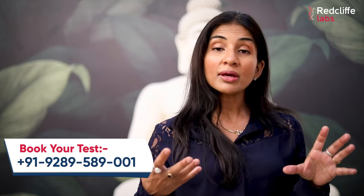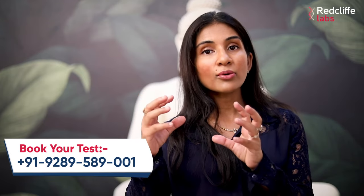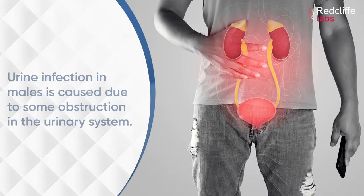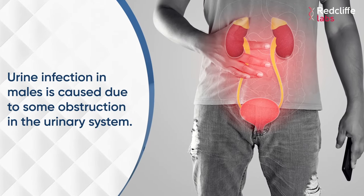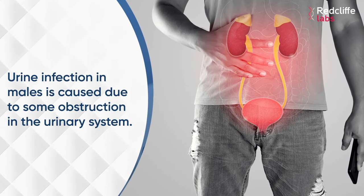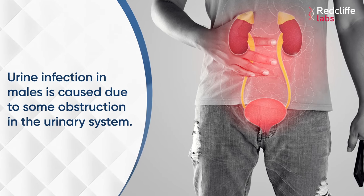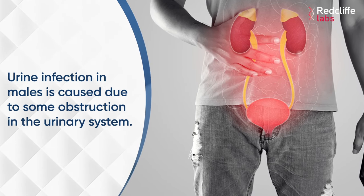Urine infections — if it is in persons, then why do these symptoms occur? How can it be treated? It can occur in children or boys. Usually, if it is in men, then there is some cause of it, like there is some obstruction — prostate, kidney stones, or some urological obstruction — so the chances of infection in the urine increase.